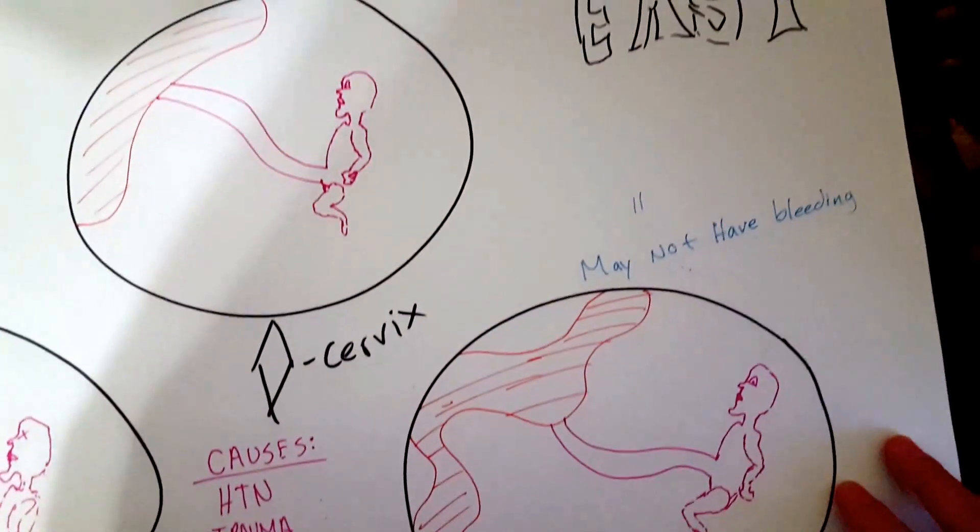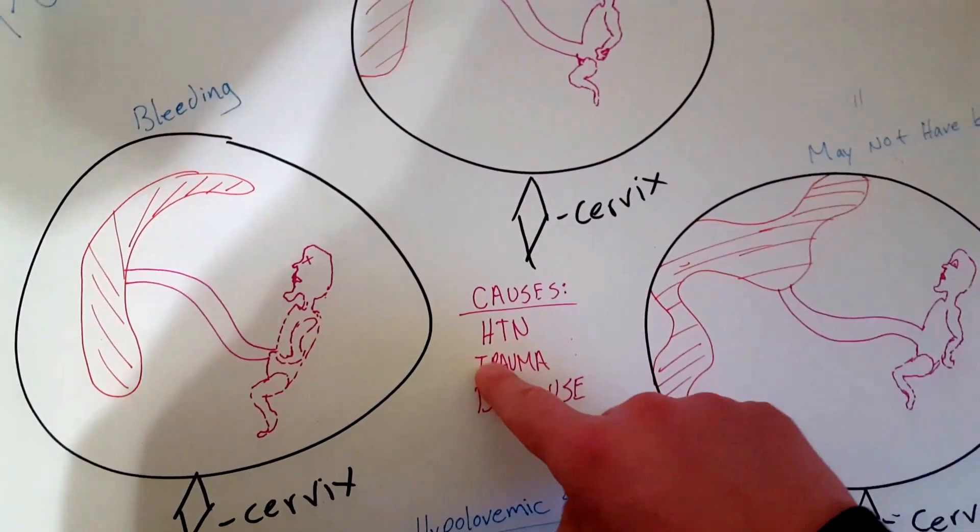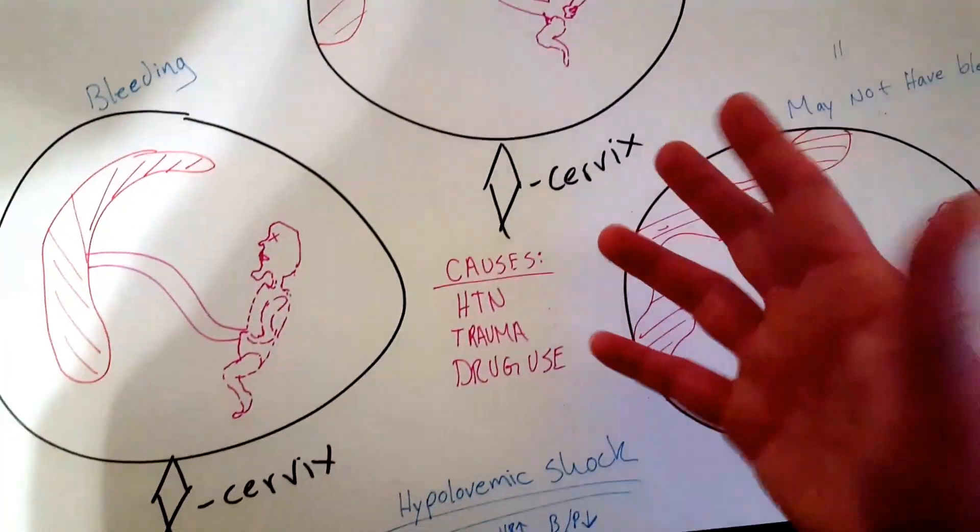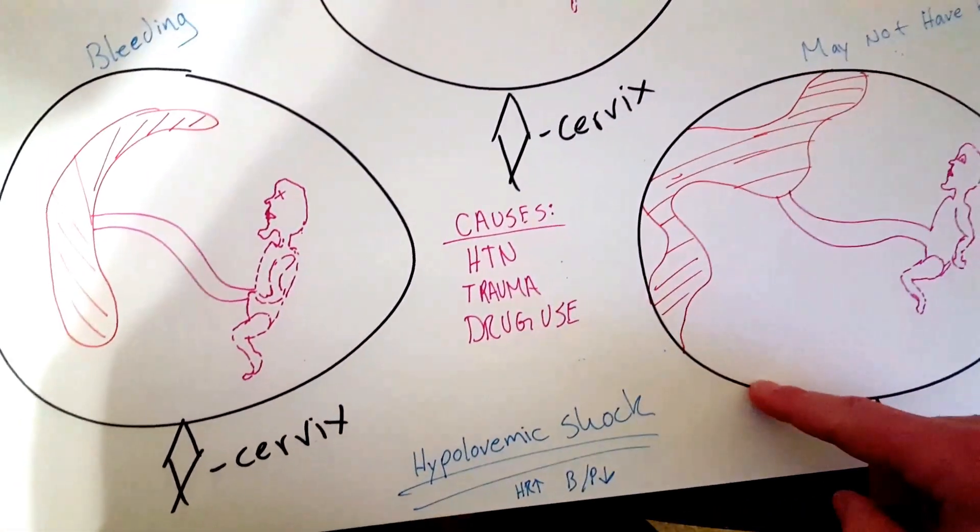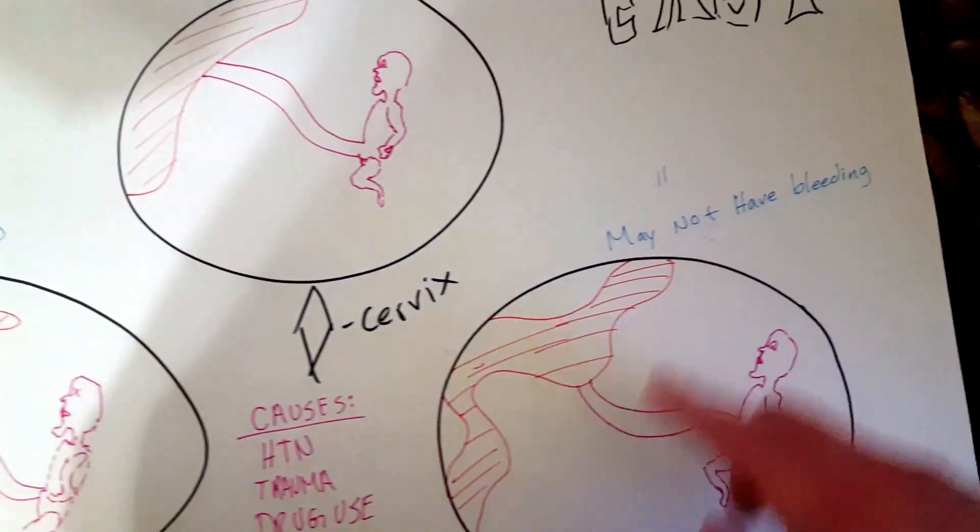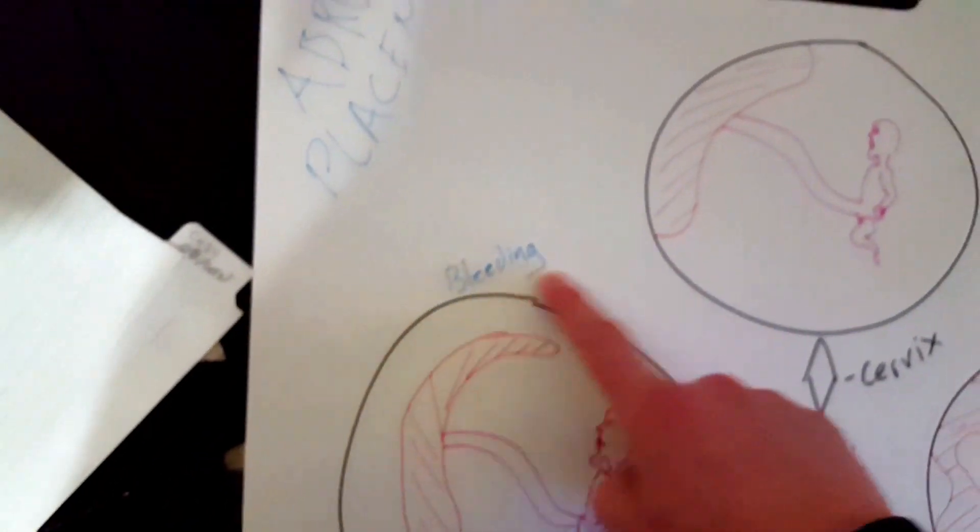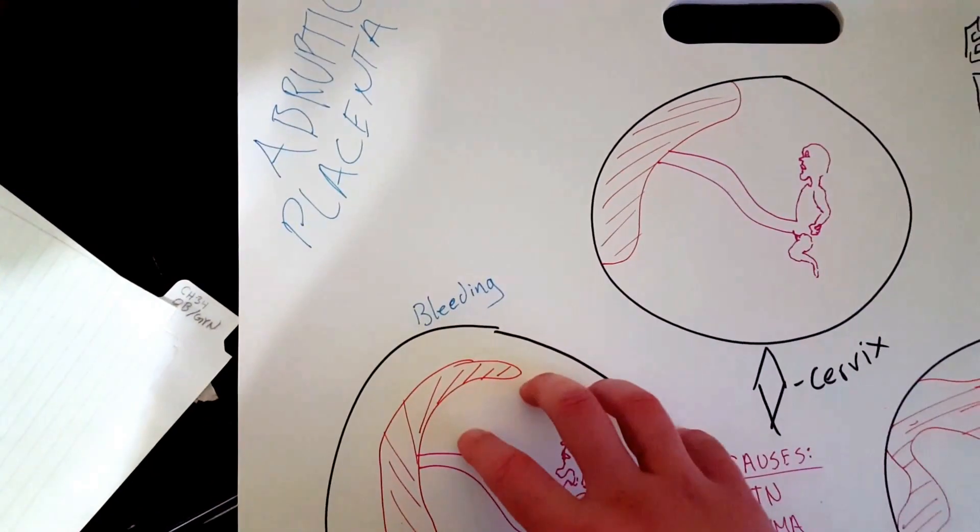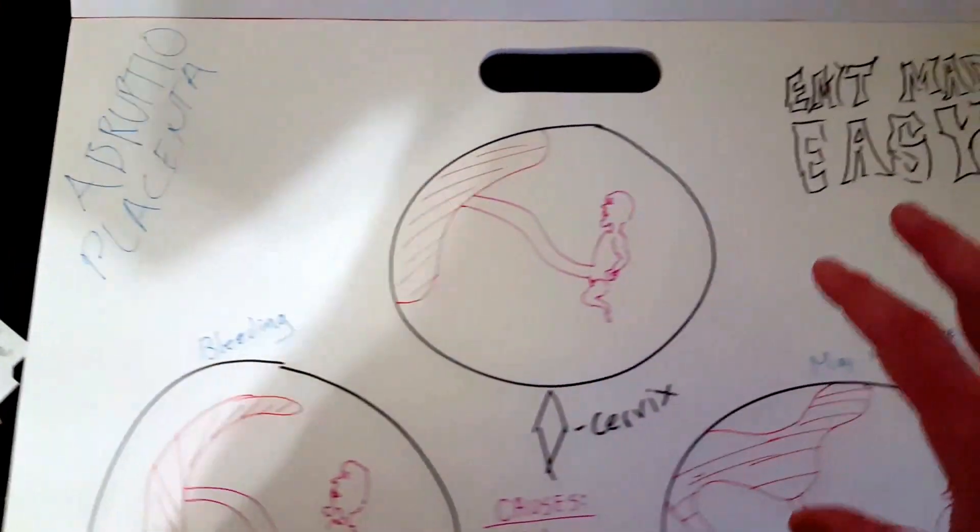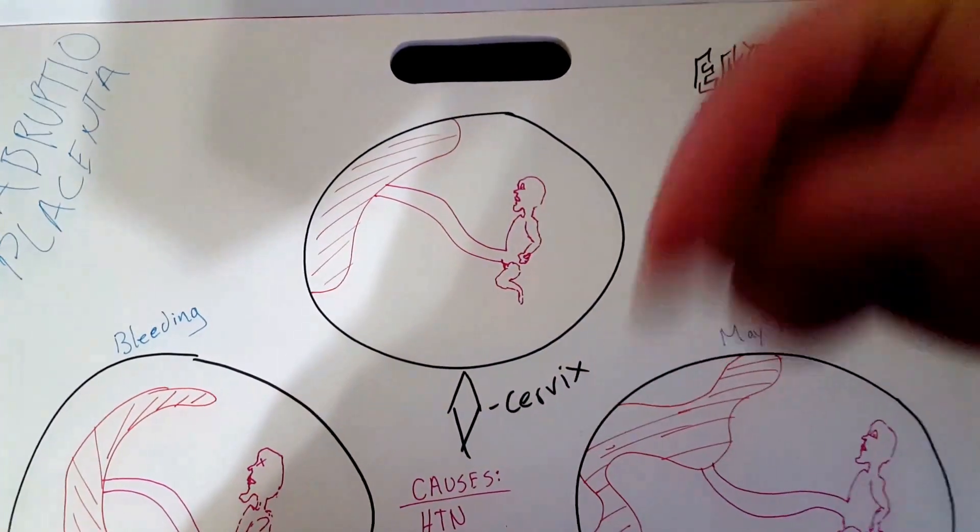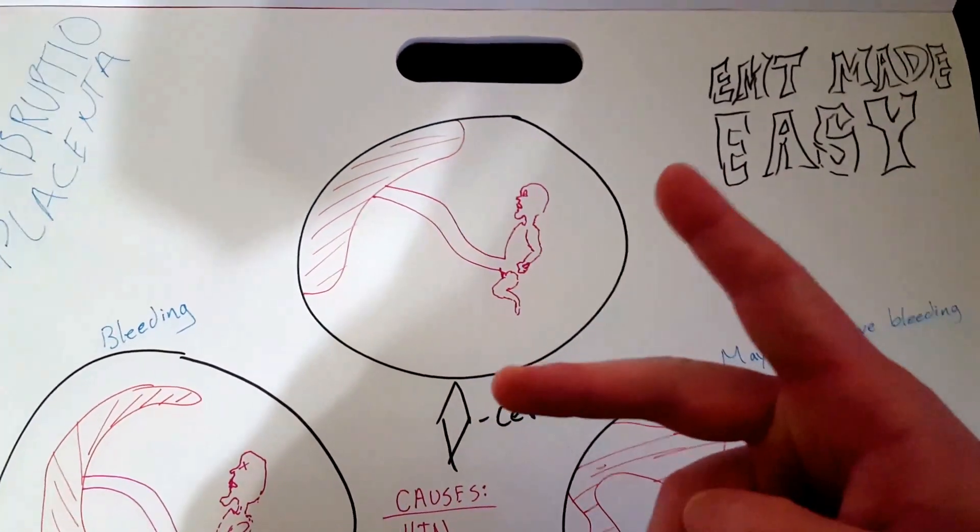That's pretty much it. As far as abruptoplacenta, we went over the causes, what's going to cause it, what could cause it, what to expect, hypovolemic shock. May not have bleeding with a partial, you will definitely have bleeding with a complete abruptoplacenta. And let me know if you have any questions, leave a comment below and I will answer them. See you later. Bye.